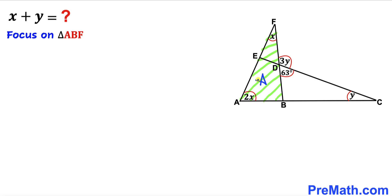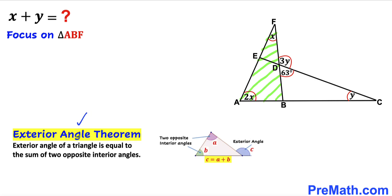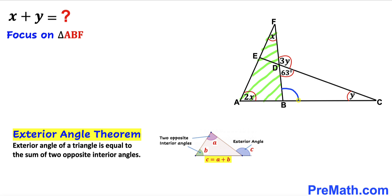Let's focus on triangle ABF and recall the exterior angle theorem: an exterior angle of a triangle equals the sum of the two opposite interior angles. In our case, this angle is our exterior angle, equal to the sum of the two opposite interior angles — 2x and x — making 3x.